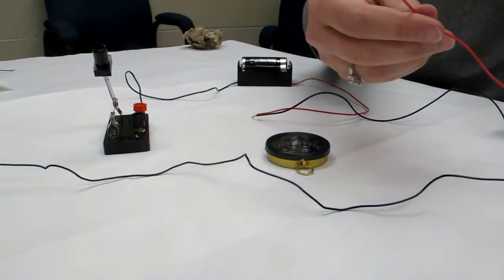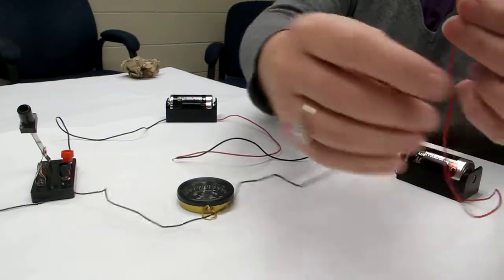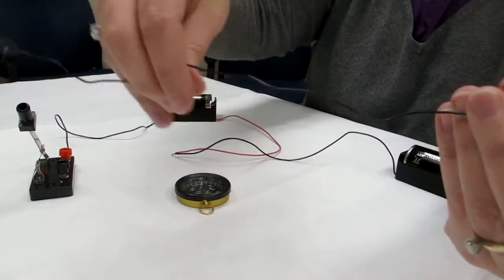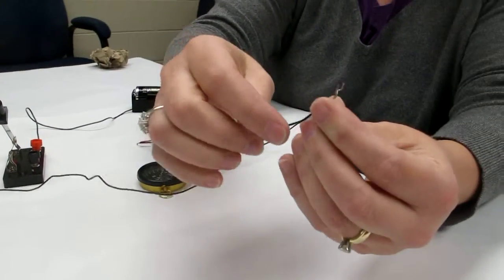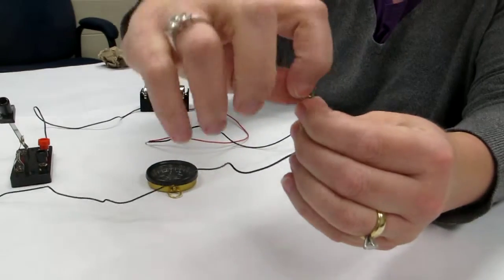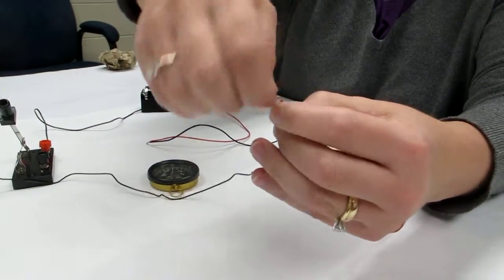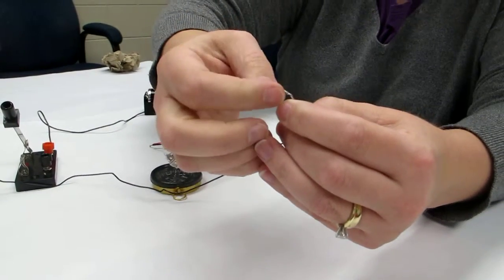You're going to take the positive lead or wire from the other dry cell battery and you're going to connect it to a very long stripped wire. Again, you just take the two stripped ends of that positive and negative wire and twist them together for a full contact.